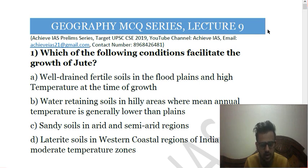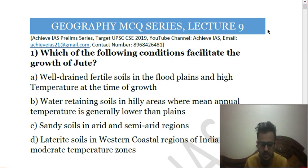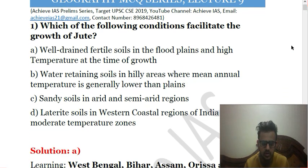The correct answer is A — that is well-drained fertile soils in the floodplains and high temperature at the time of growth. Jute is a crop that requires well-drained soil and also requires high temperature at the time of growth. It is mainly grown in northeastern areas and eastern India, for example in West Bengal and northeastern states. Also, a considerable area of jute cultivation was lost to East Pakistan when India got partitioned, which affected India's production capability of jute. So A is the correct answer.